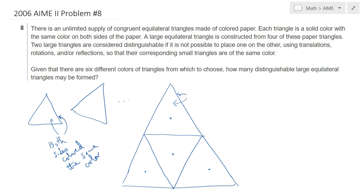Given that we have six colored papers available, unlimited supply of six different colors, how many distinguishable large equilateral triangles may be formed? Obviously up to rotations and reflections, right?